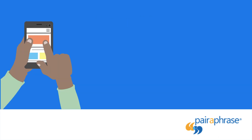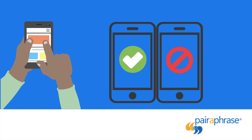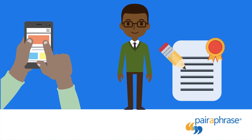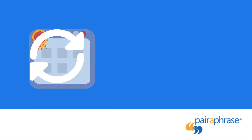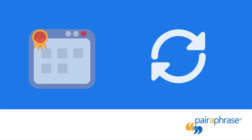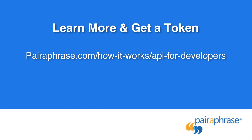Keep in mind that choosing the right translation API can make or break the success of your apps and documentation. The Paraphrase API can be used to produce human quality level translations across not only documents, but applications. Power your apps with high-quality, reusable translations that can be updated in no time. Want to learn more about the Paraphrase API, pricing, and how to get your token? Visit the following link to get started or email us at info@paraphrase.com if you have any questions.